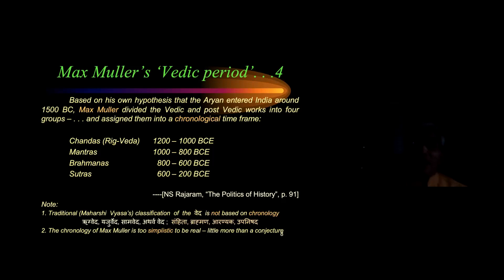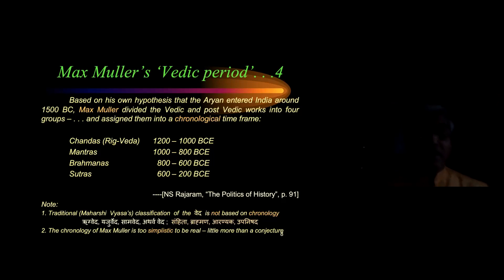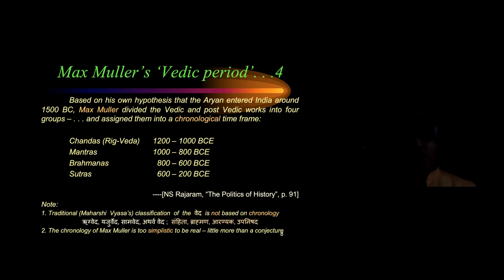He said the Rig Veda started around 1200 BC. He divided the total corpus into four sections: Chandas (the Rig Veda and Yajur Veda etc.) from 1200–1000 BC, Mantras from 1000–800 BC, Brahmanas from 800–600 BC, and Sutras from 600–200 BC. This is the time period he allocated.